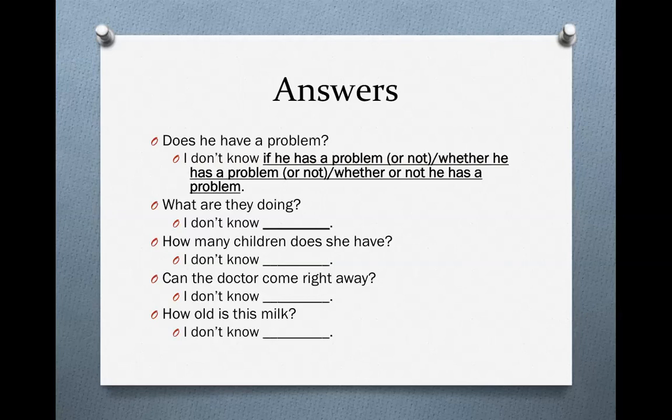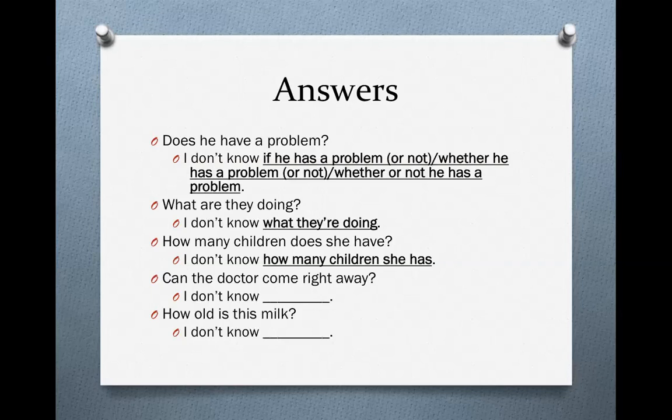'What are they doing?' — this one's easy, we have a question word. Question-word noun clauses are very easy: 'I don't know what they're doing' — subject, verb. 'How many children does she have?' Again, easy — question word: 'I don't know how many children she has.' Just make sure that you change the verb to agree with the subject.